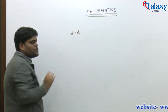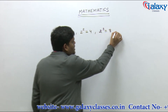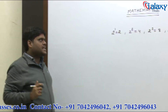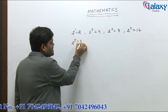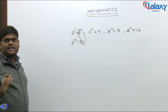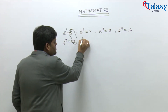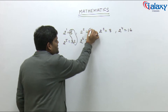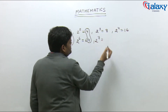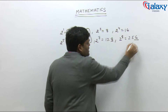2 to the power 1 is 2, 2 squared is 4, 2 to the power 3 is 8, and 2 to the power 4 is 16. As soon as we move to 2 to the power 5, which is 32, you can see that the digit at the unit place starts repeating itself — the 2 appears again. Similarly, 2 to the power 6 is 64, 2 to the power 7 is 128, and 2 to the power 8 is 256.